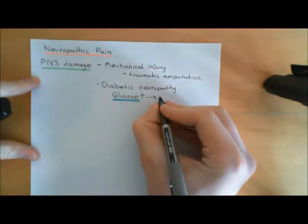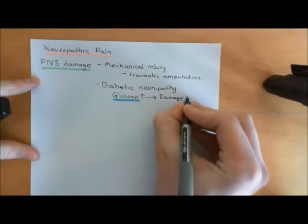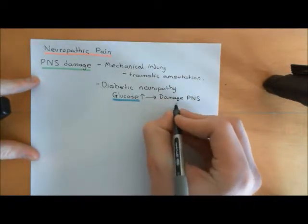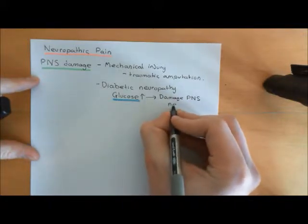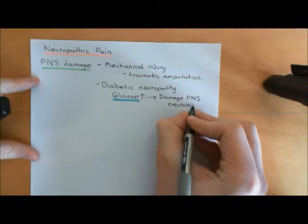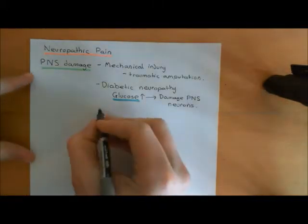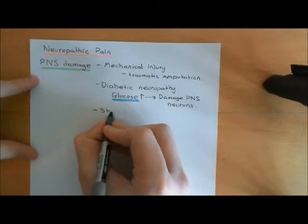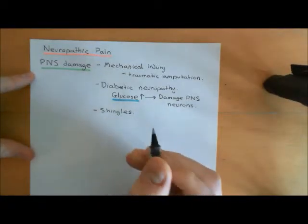Elevated blood glucose can damage PNS neurons, including these primary nociceptive afferents, and if those get damaged it can result in neuropathic pain. One final thing to mention is that shingles can also cause peripheral nervous system damage leading to neuropathic pain.